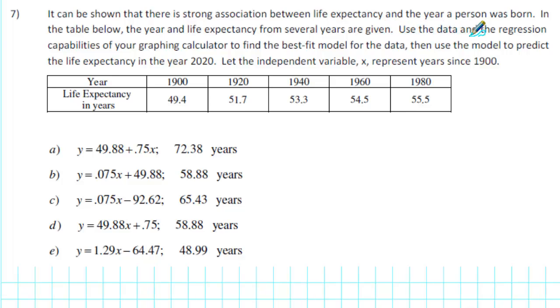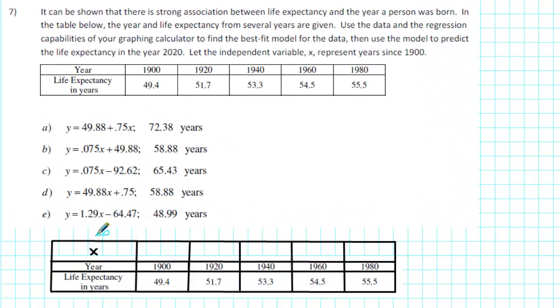Then use the model to predict the life expectancy in the year 2020. Let the independent variable x represent years since 1900. Let's first of all add a row to our table that indicates the values of x that correspond to the given years. x represents the number of years since 1900.